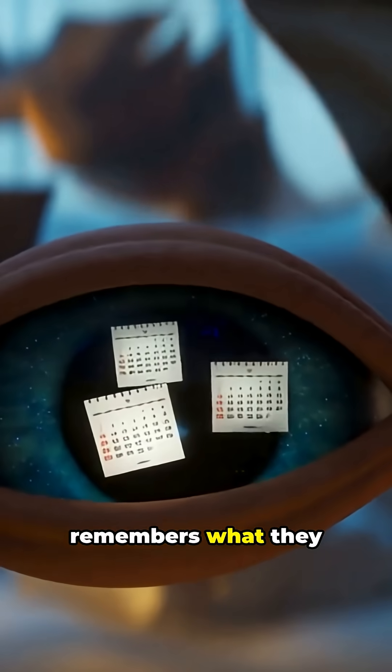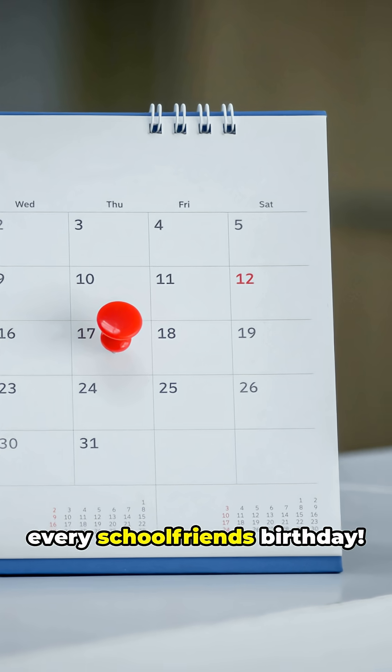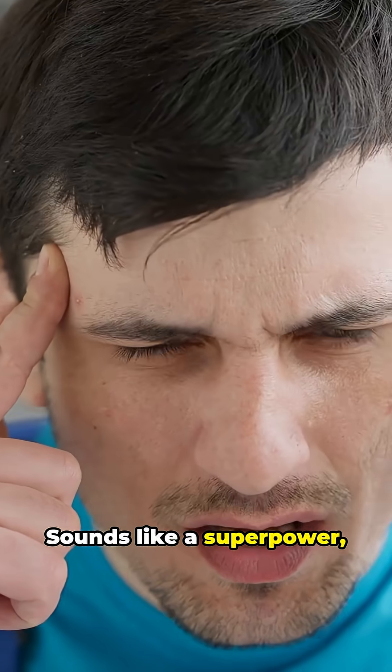I bet you didn't know someone remembers what they ate June 3, 1999, what they wore and every school friend's birthday. Sounds like a superpower, right?